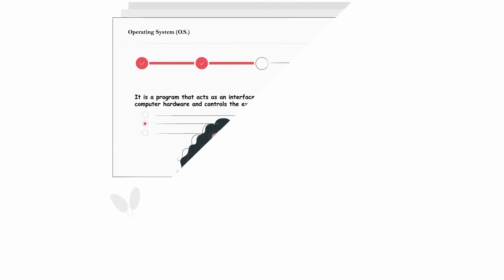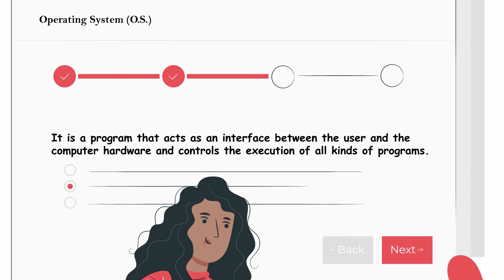An operating system is a program that manages computer hardware. Computer hardware examples include monitor, printer, keyboard, etc. The operating system is a program that manages these hardware components. It also provides a basis for application programs and acts as an intermediary between the computer user and the computer hardware.